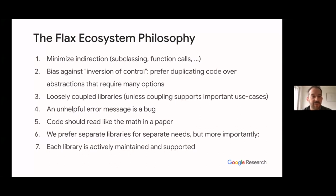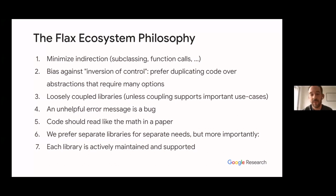The third point is loosely coupled libraries, comparable to the Unix philosophy. Just like Unix processes operate through streams and functions can be piped, in JAX, libraries interoperate by passing pure functions to each other — pure functions are the lingua franca. Fourth, we care about error messages and use slugs that are well documented. Fifth, code should read out the math in the paper — the math is what matters, and there should be few distractions from it.